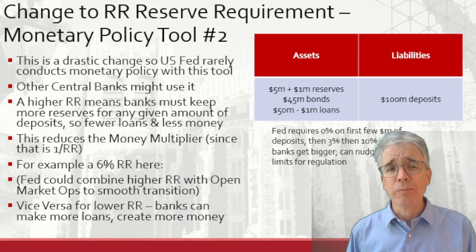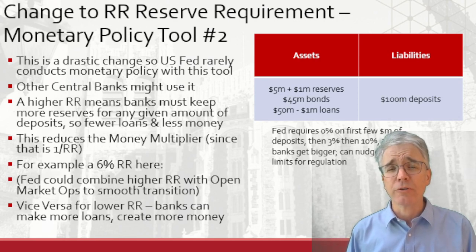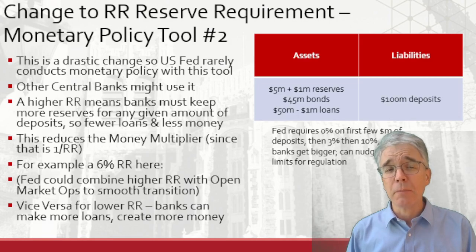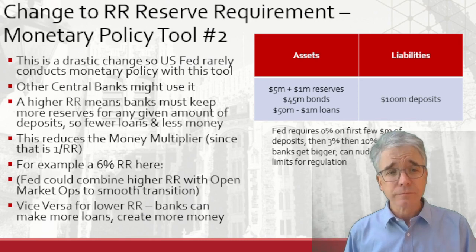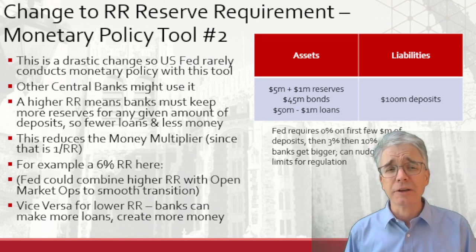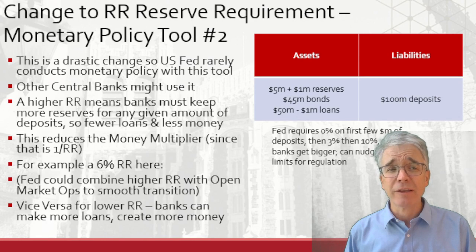For example, in the T-table, I've supposed a 6% reserve ratio, up from 5%. So the bank has got to come up with a million more reserves. It's going to have a million less loans. Those reserves are going to be locked up, and the bank system is not going to have excess reserves.